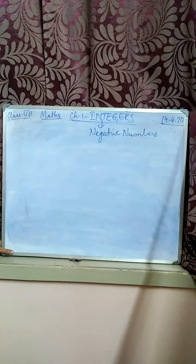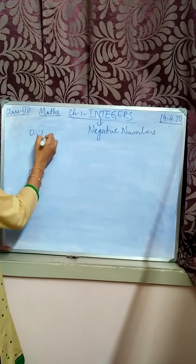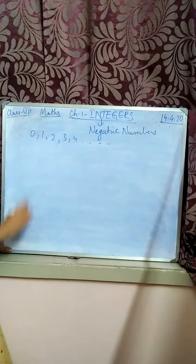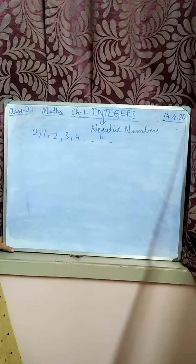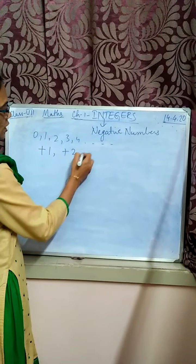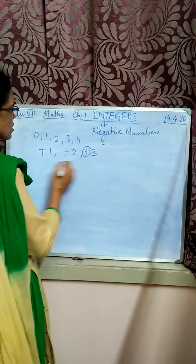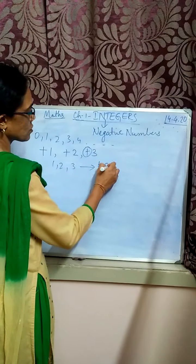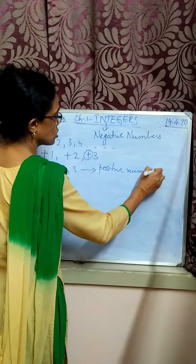So far, whatever numbers you have been studying — 0, 1, 2, 3, 4 — all these numbers are positive numbers. Why do we say them as positive numbers? We are not writing plus 1, plus 2. We are not putting this plus sign before the number. We are just writing 1, 2, 3, 4. It is understood they are positive numbers. These numbers you are learning since your childhood.